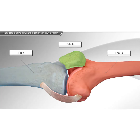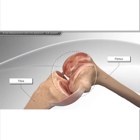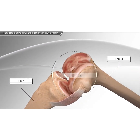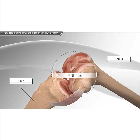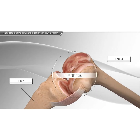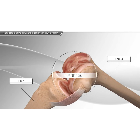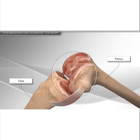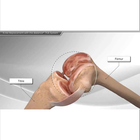In knee arthritis, the cartilage on the end of the bones slowly wears away, causing pain and irritation, making daily activities difficult. Arthritis can affect all or just one area of the knee. In this case, the entire knee is affected and a total knee replacement is performed.